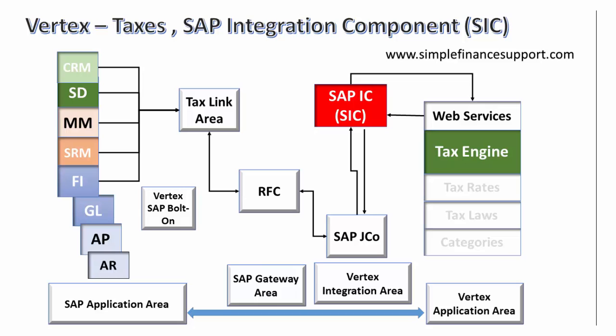This is the end-to-end description of how data flows from the SAP application area to the Vertex application area. Tax decisions require information from application modules such as vendor address and vendor details. Once vendor details flow into the Vertex application area, it returns information such as jurisdiction codes in the case of US and Canada, and for other countries, details like exempt or non-exempt status.